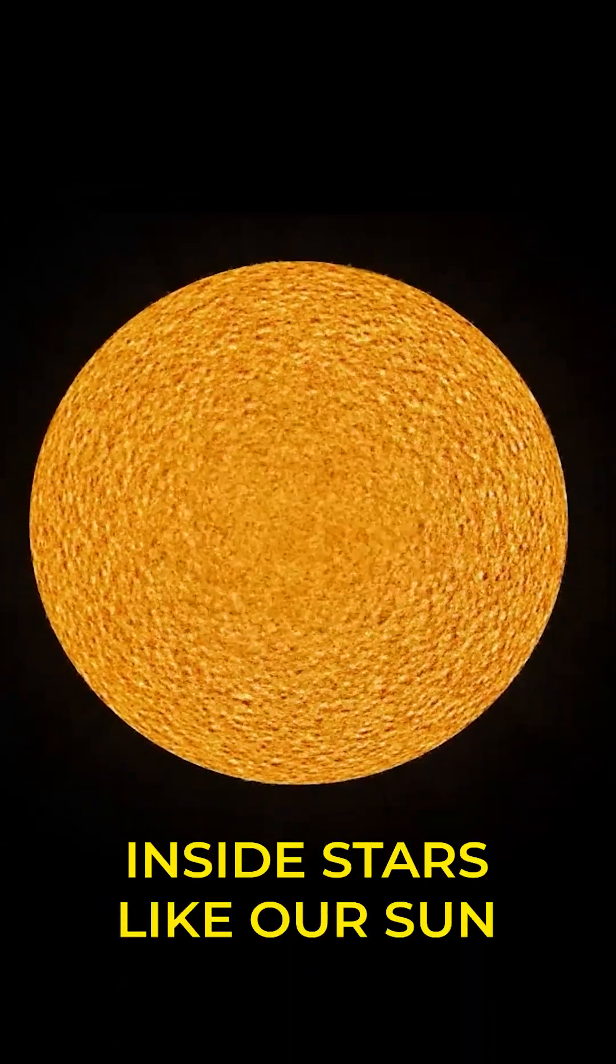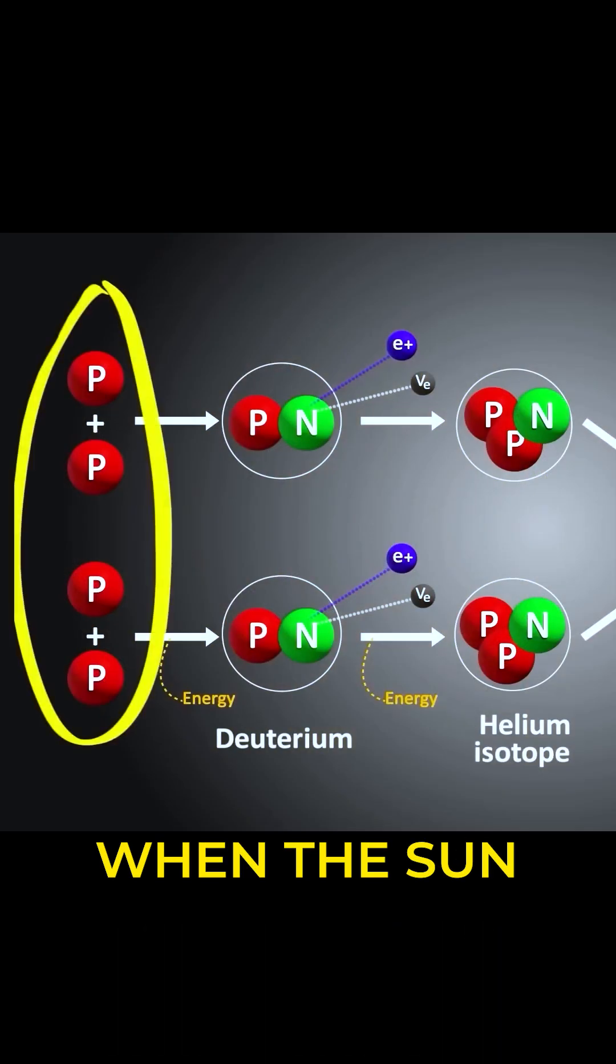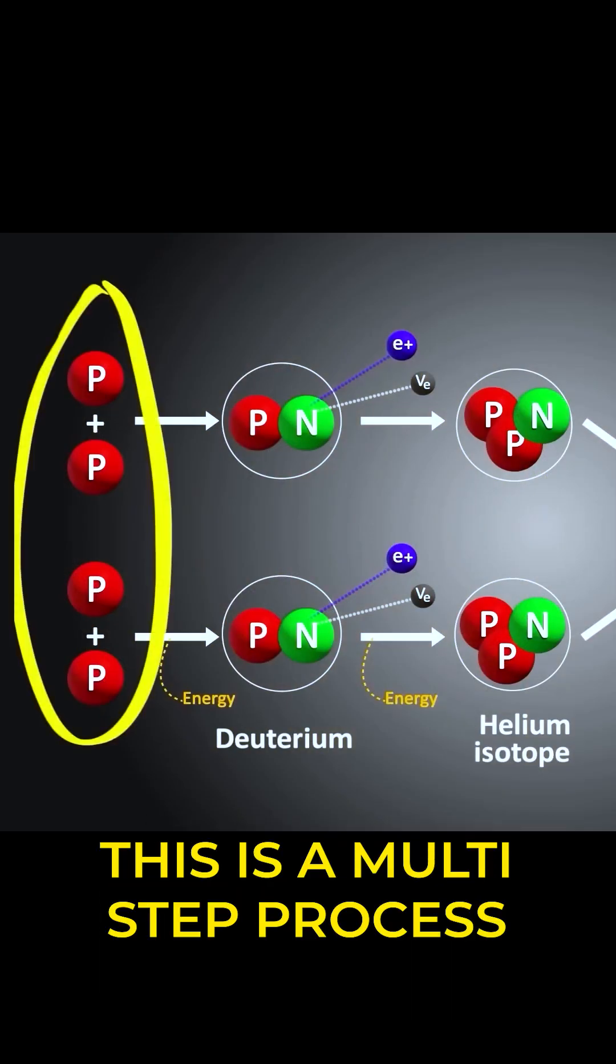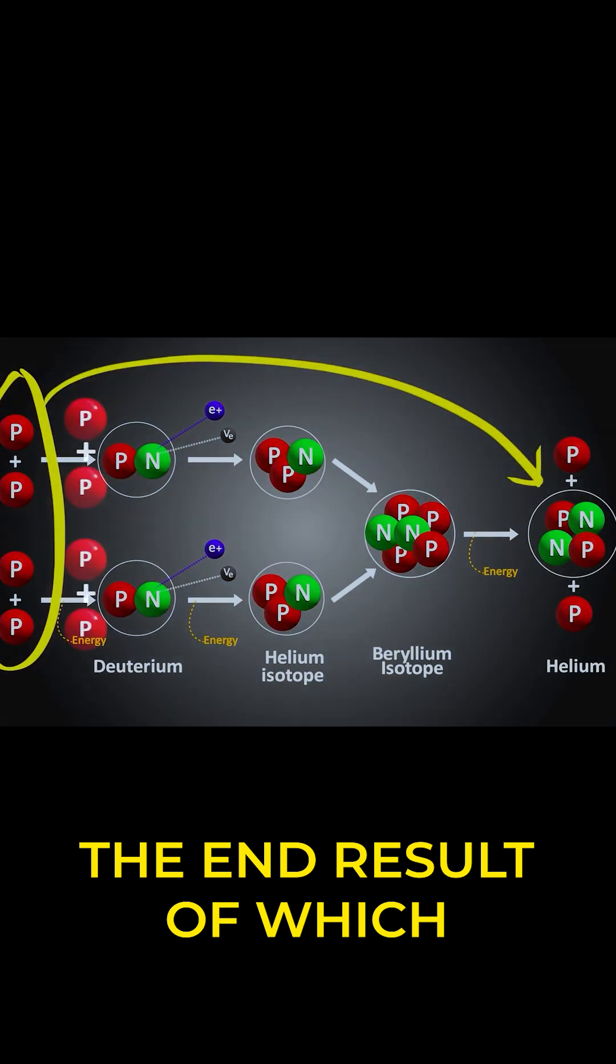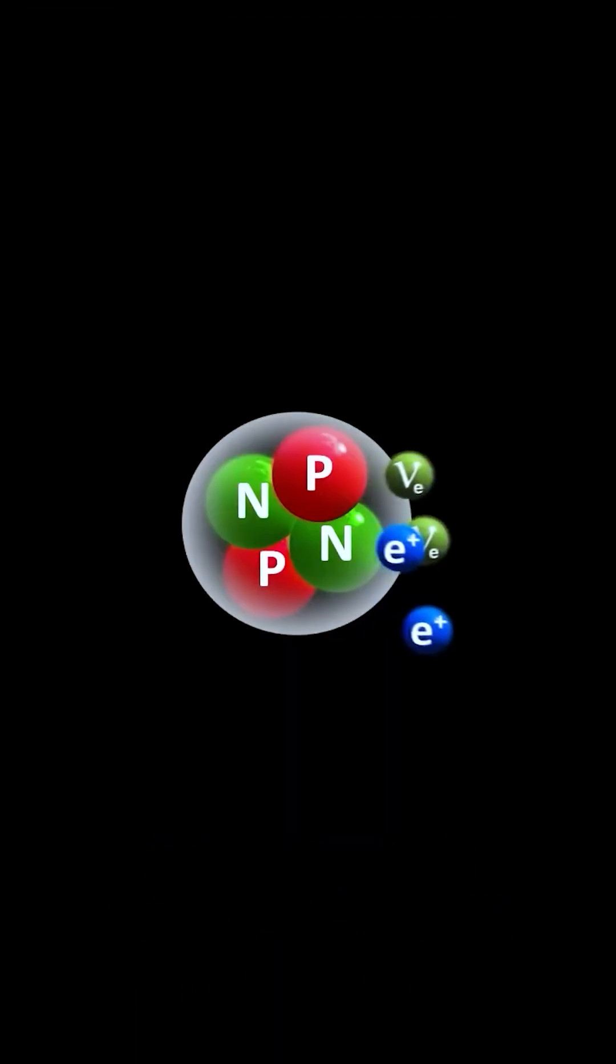The tremendous fusion reaction inside stars like our sun is the reason these particles are so abundant. When the sun fuses hydrogen to helium, this is a multi-step process, the end result of which turns four protons into a helium nucleus consisting of two protons and two neutrons.